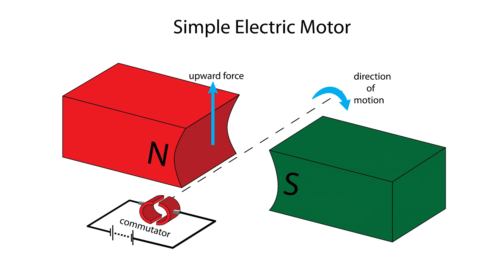One end of the coil is attached to each half of the commutator and then the electric current from the battery will connect to the motor's electric terminals.